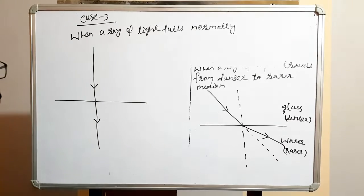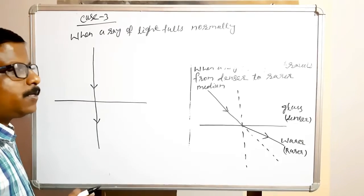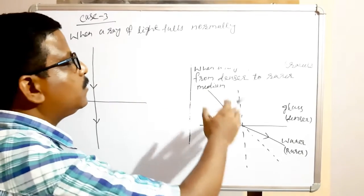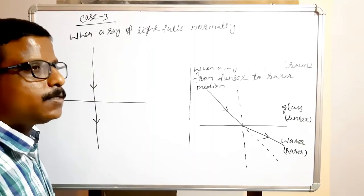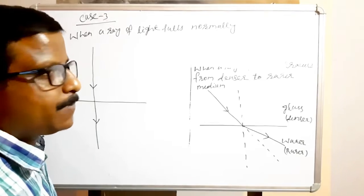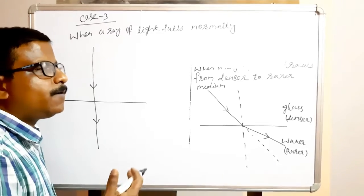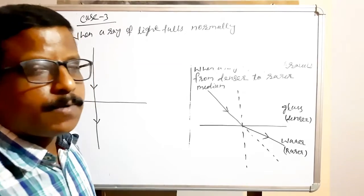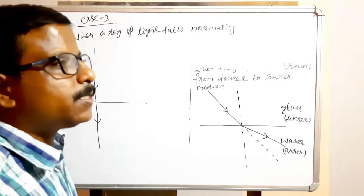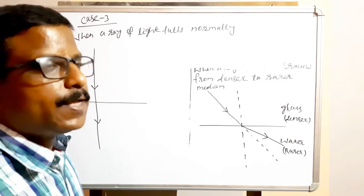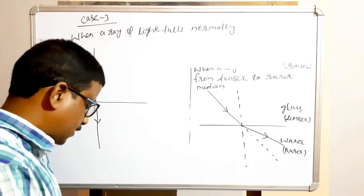Now we have to read about the terminology related to refraction. When refraction occurs and light is refracted, what are the terms? This is very important — questions will come like this. You have to draw a figure when a ray of light travels from one transparent medium to another, and mention the incident ray, refracted ray, normal, angle of incidence, and angle of refraction.